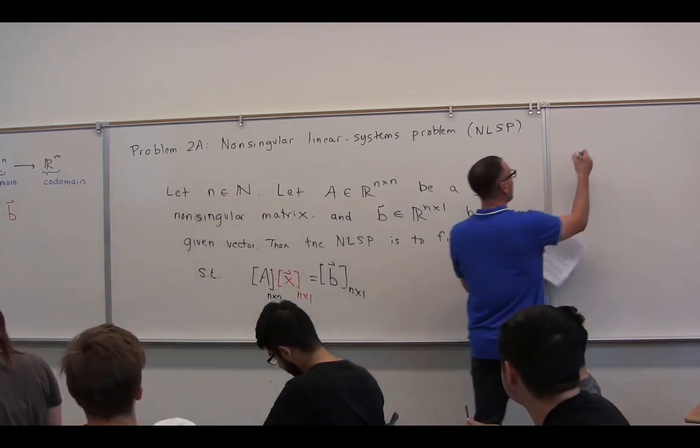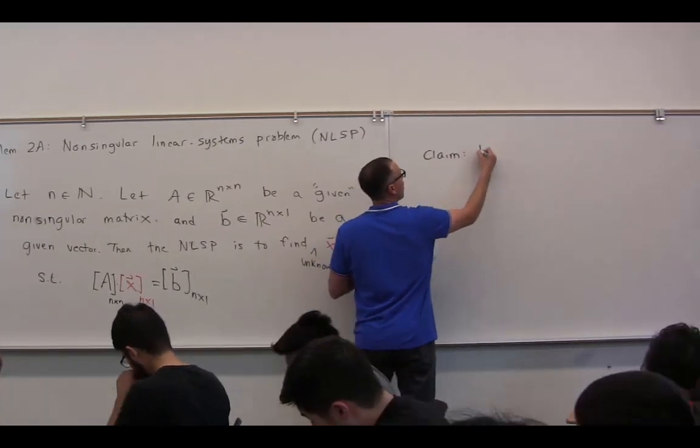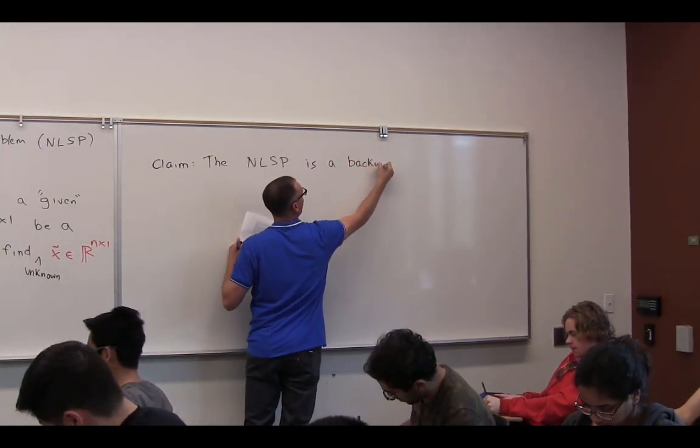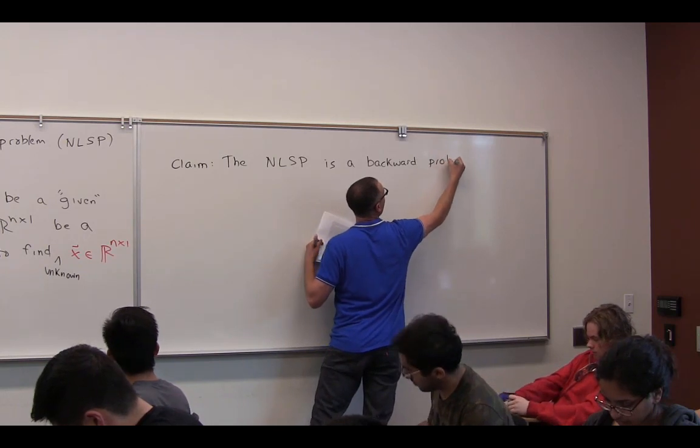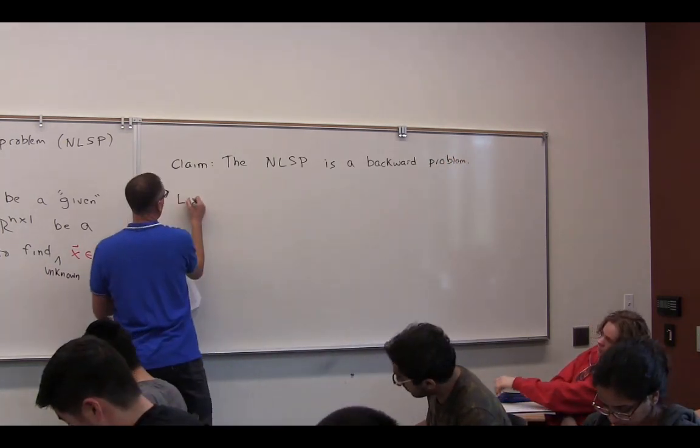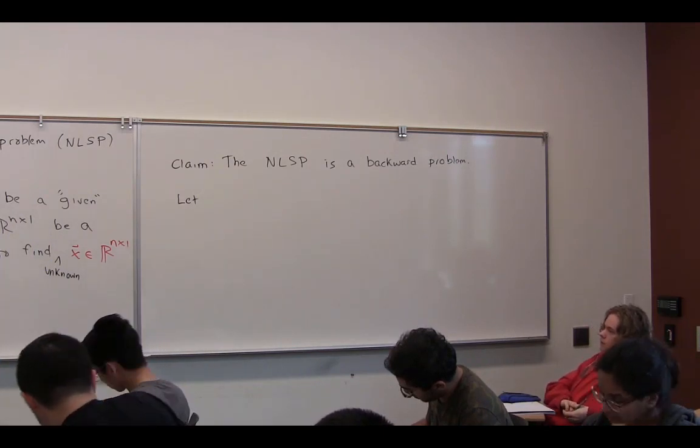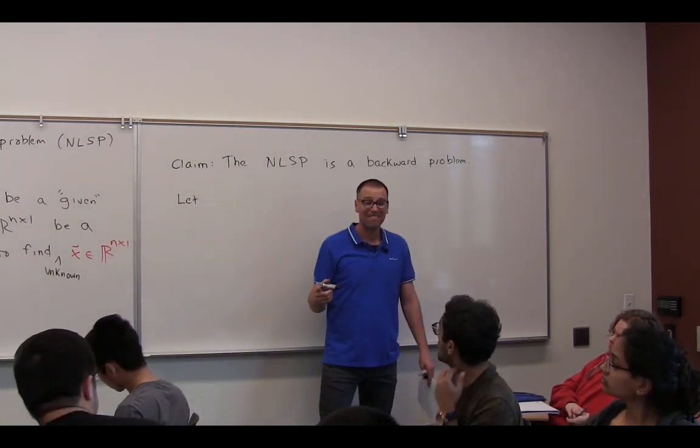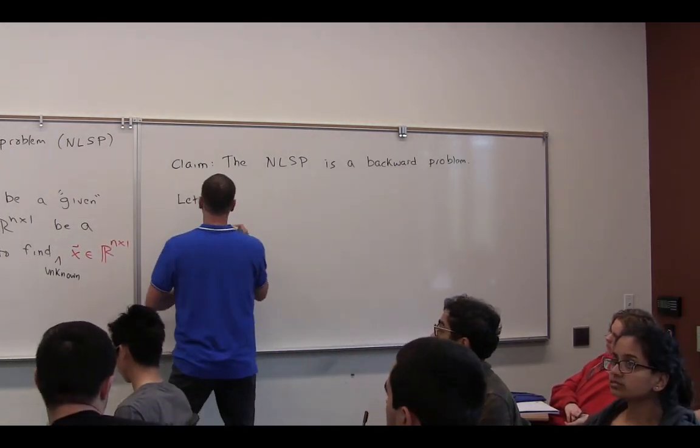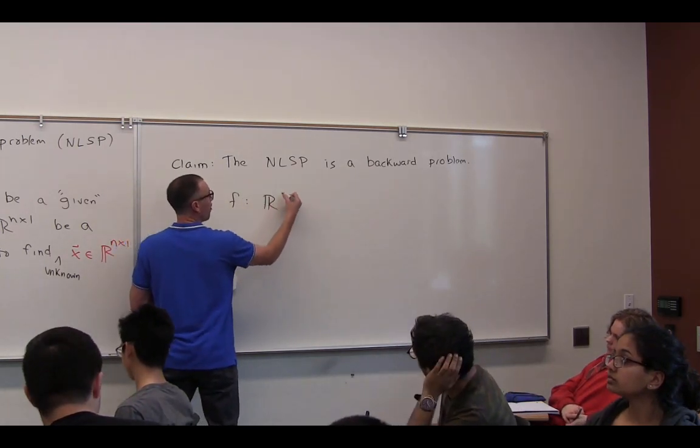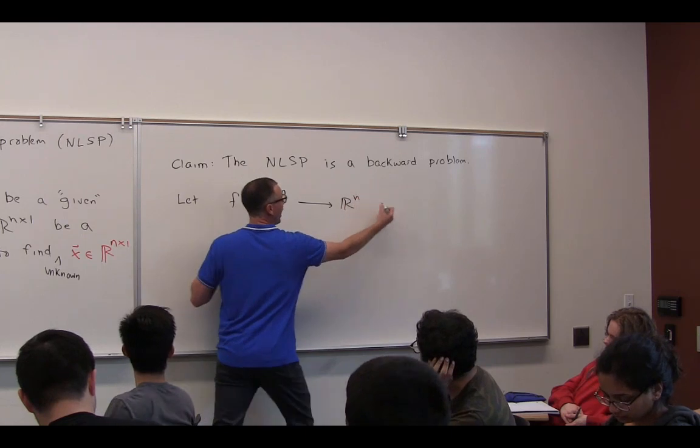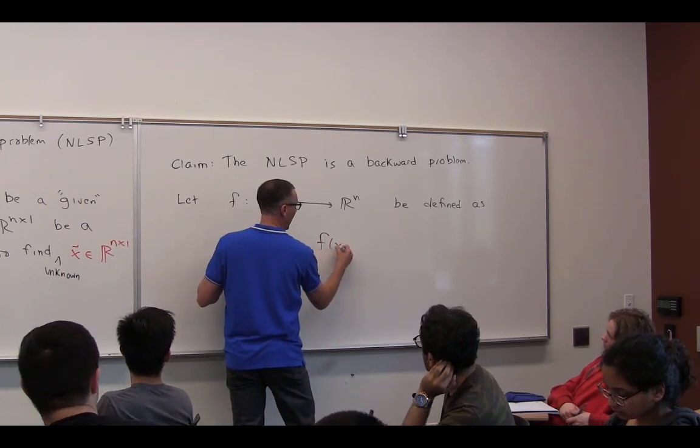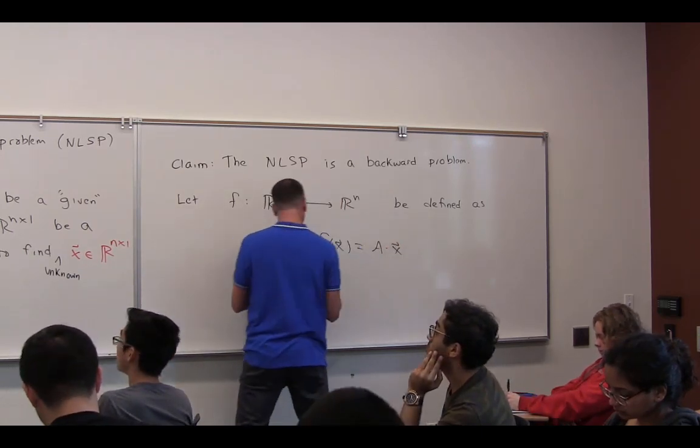Claim. The NLSP is a backward problem. Why? What was the function that we defined? The function we defined is called matrix vector multiplication. So, we're going to let F go from R^N into R^N be defined as F of X equals A times X.